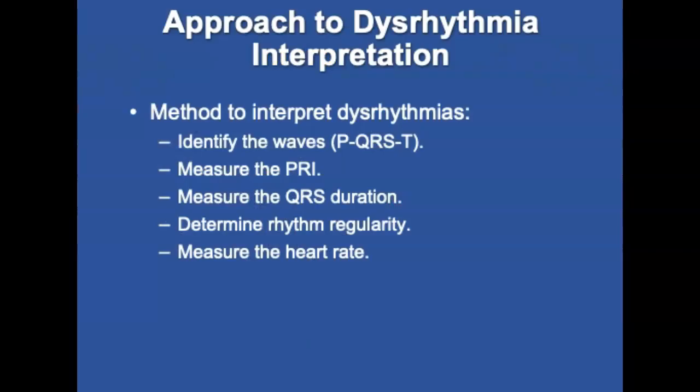When talking about dysrhythmias, there is an approach to interpreting them. When you look at the ECG strips, you're going to be on alert for specific things and go in a specific order. First, you're going to identify the waves — the P, Q, R, S, and T waves. Then you want to measure the PRI interval, measure the QRS duration, determine the rhythm irregularity, and measure the heart rate.